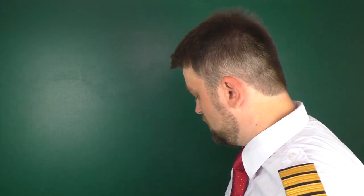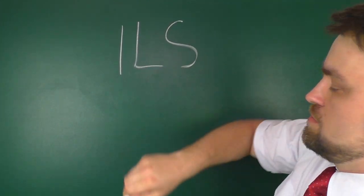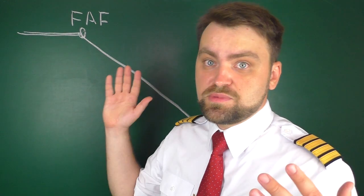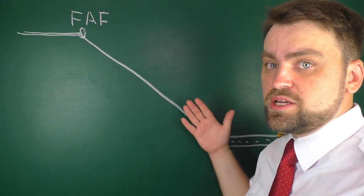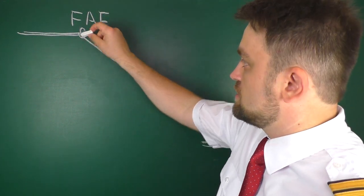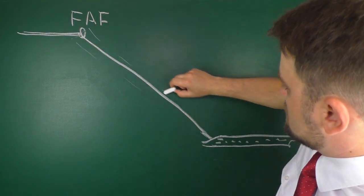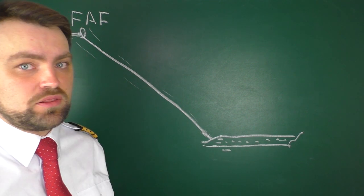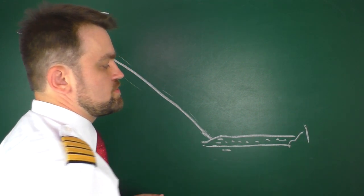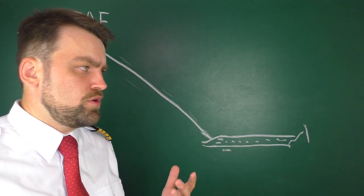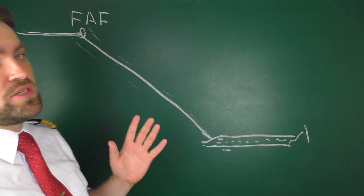Why is it simpler in some ways? Because the system used to perform the automatic approach and landing is the basic ILS — Instrument Landing System — used in many airports and runways all over the world. I've drawn you a scheme of the Boeing 737 automatic approach. Here we have the ILS glide slope, the runway itself, and the final approach fix where we enter the glide slope. The glide slope antenna is located near the runway, and the localizer antenna is near the opposite threshold.